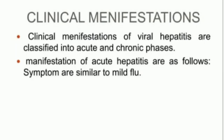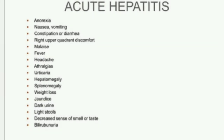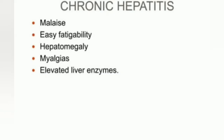Clinical manifestations of viral hepatitis are classified into acute and chronic phases. Manifestations of acute hepatitis include symptoms similar to a mild flu, anorexia, and nausea. Chronic hepatitis manifestations include malaise, easy fatigability, hepatomegaly, and elevated liver enzymes.